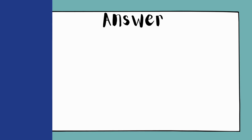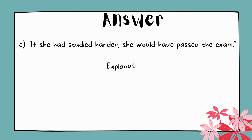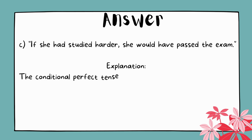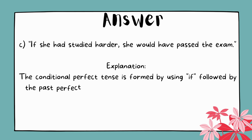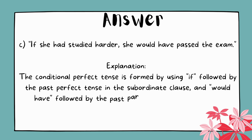The answer is C. If she had studied harder, she would have passed the exam. Explanation: The conditional perfect tense is formed by using 'if' followed by the past perfect tense in the subordinate clause, and 'would have' followed by the past participle in the main clause.